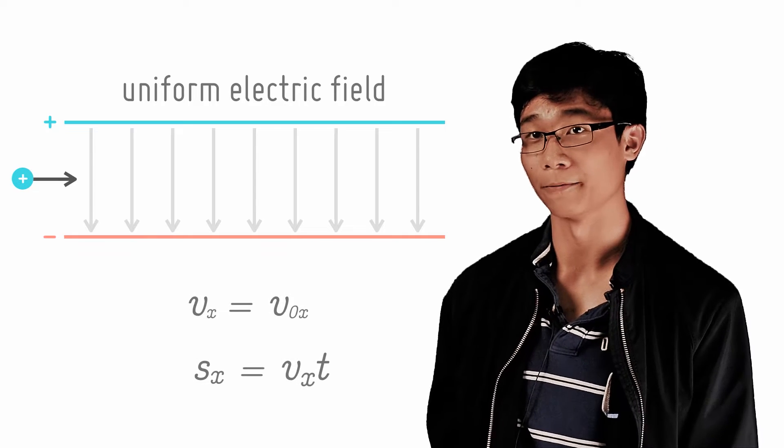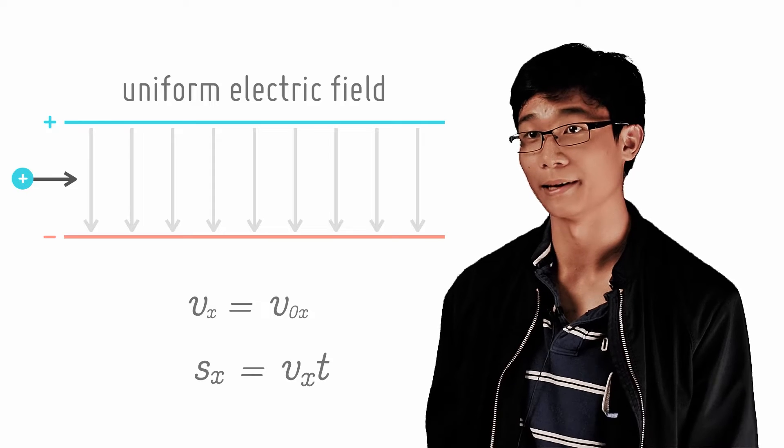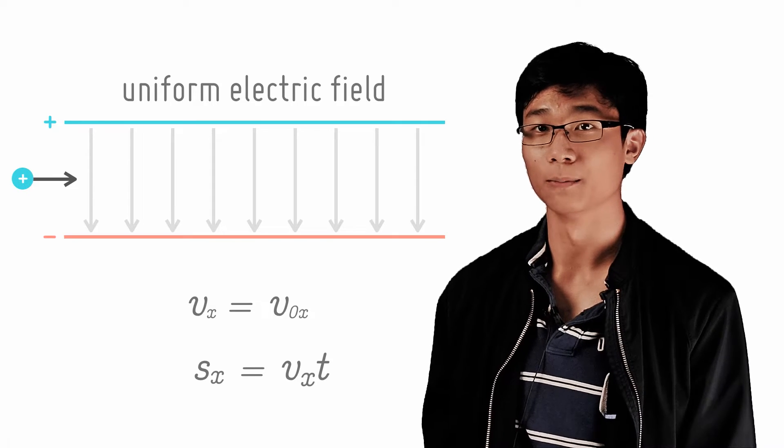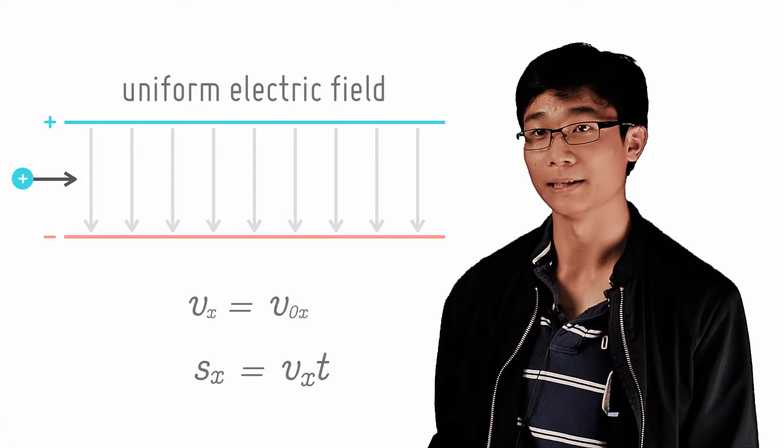Perpendicular to the electric field, the velocity of the particle is unchanged because there's no force acting in that direction. And therefore, the motion of the particle in that direction is simply s equals to vt.